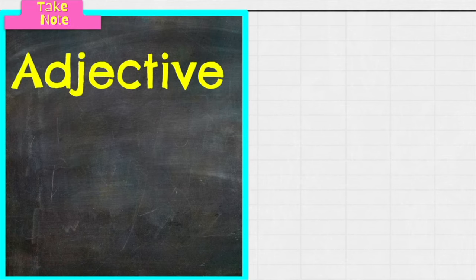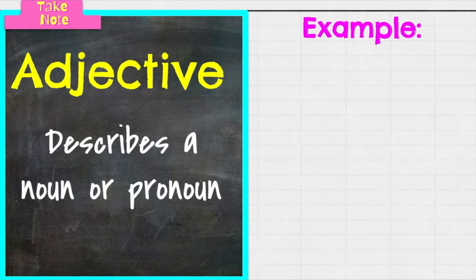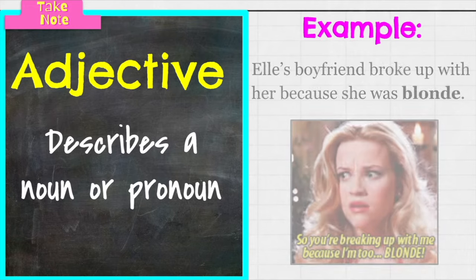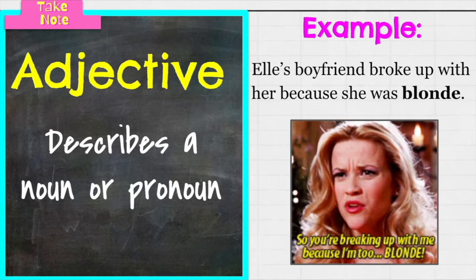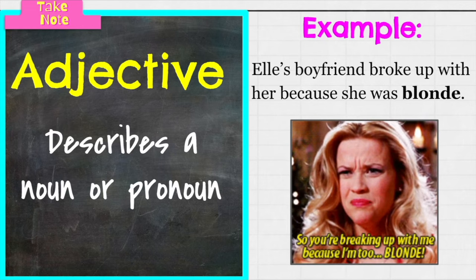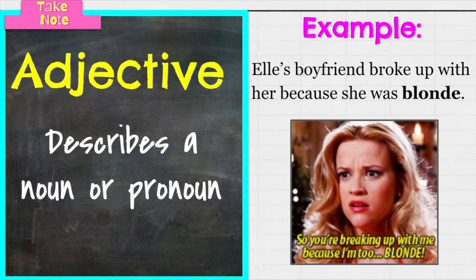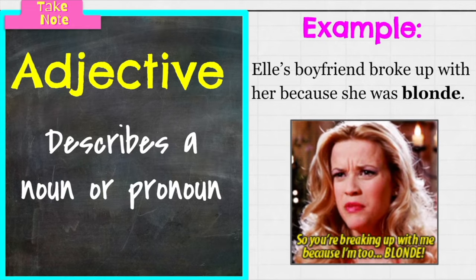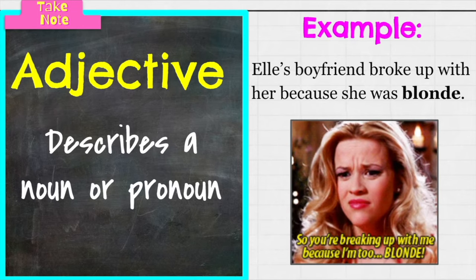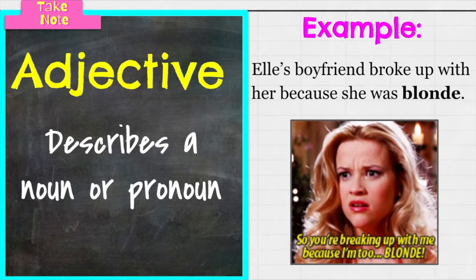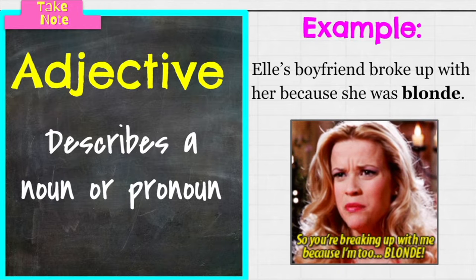First, we have the adjective. I love adjectives because they are describing words — they describe a noun or a pronoun. So if you want to call someone happy, sad, elated, joyful, these are all great describing words and they're adjectives. Our example: Elle's boyfriend broke up with her because she was blonde. Blonde is the adjective — it's describing her hair. If you like Legally Blonde, you're going to love this presentation because that's all we're looking at with examples.